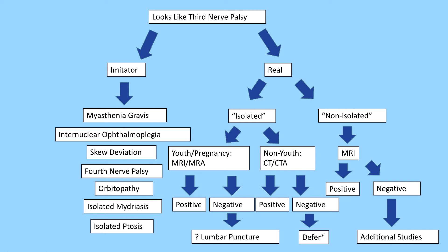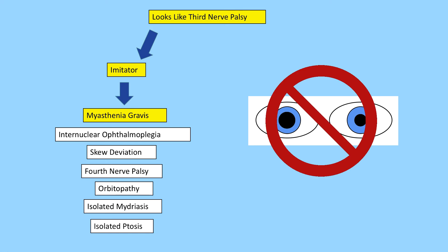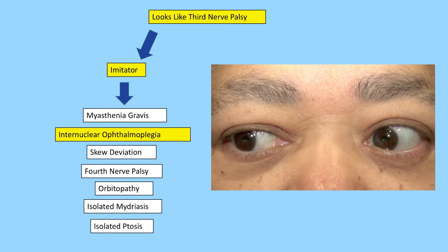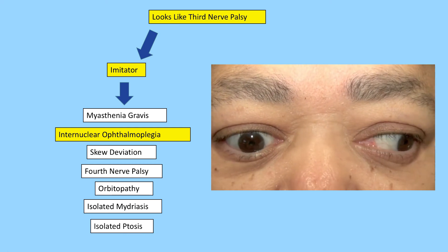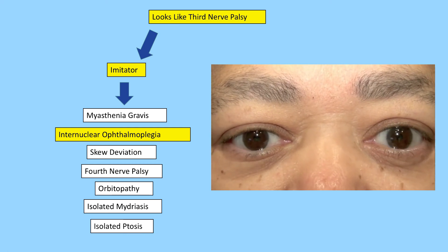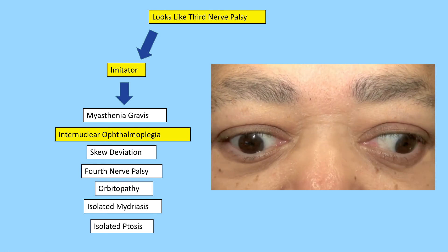Here is another way to approach the management of non-traumatic third nerve palsy using a flow chart. First, be sure it is not an imitator. Myasthenia gravis can produce any type of ocular misalignment and may mimic a third nerve palsy — especially with reduced vertical ductions and ptosis — but myasthenia should not cause a dilated pupil. Internuclear ophthalmoplegia will impair adduction, but vertical ductions should be intact with no ptosis or pupillary abnormality. Isolated impairment of adduction with or without nystagmus in the abducting eye is more often internuclear ophthalmoplegia than third nerve palsy.